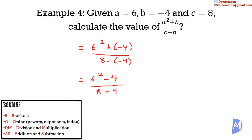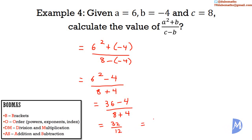Remember in BODMAS, we work out brackets — there are no brackets. So we work out order first: 6 squared is equal to 36. Then we work out the numerator and denominator. So we get 32 over 12. This can be further reduced to 8 over 3.